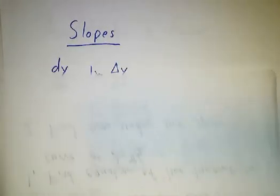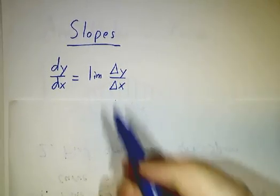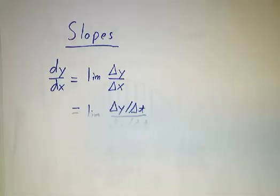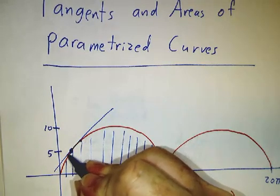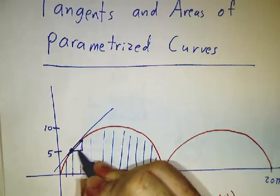So let's first look at slopes of tangent lines. We want to figure out what is dy/dx. dy/dx, by definition, is the limit of Δy over Δx. We take two nearby points, say a point here and a point here, and we draw a straight line between them and we take the ratio of the rise over the run.